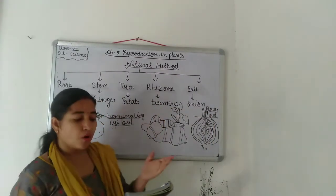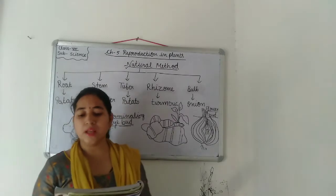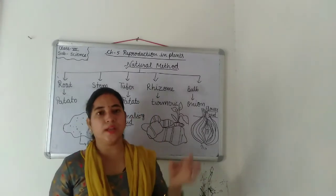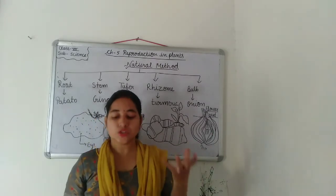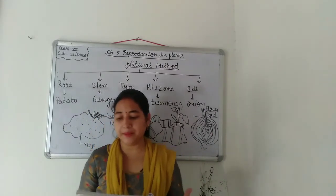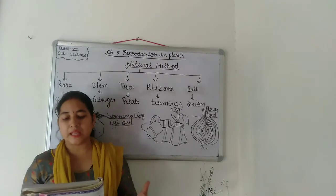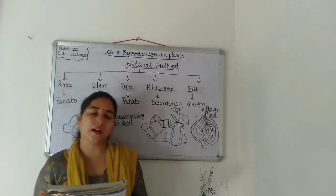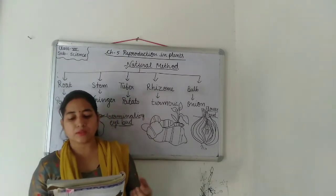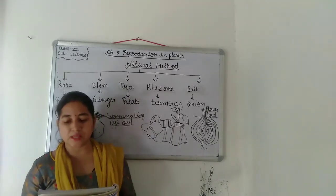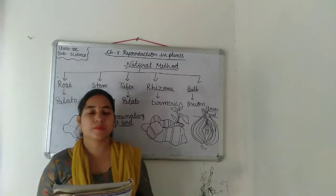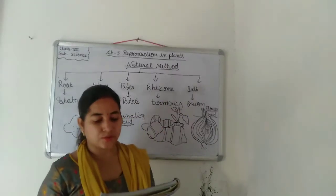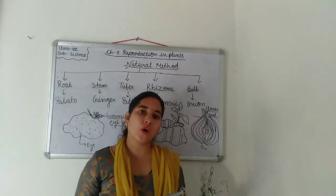Next is corm. A corm is a thick solid food-storing underground stem. Sometimes it bears papery scale leaves, as seen in gladiolus. A corm has lateral buds which grow into new plants. Ismein lateral buds ban jaate hain jo ki new plant mein develop ho jaate hain.